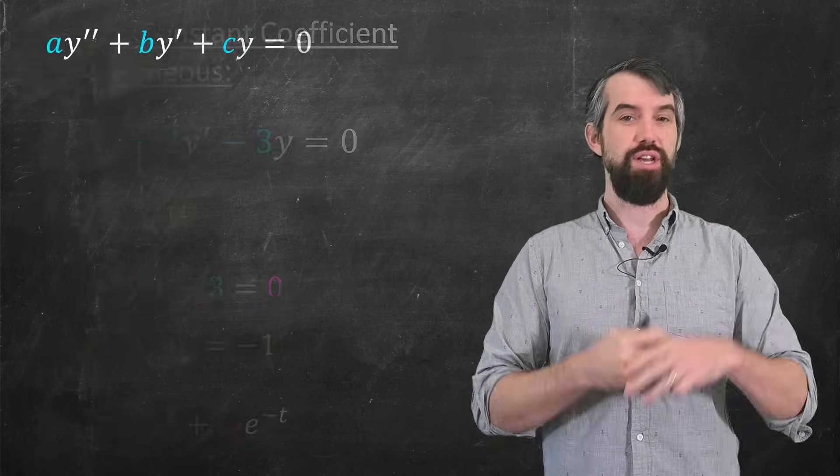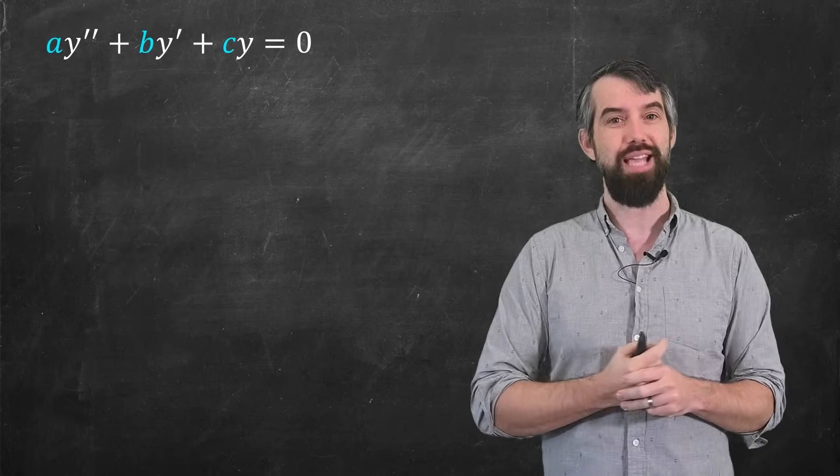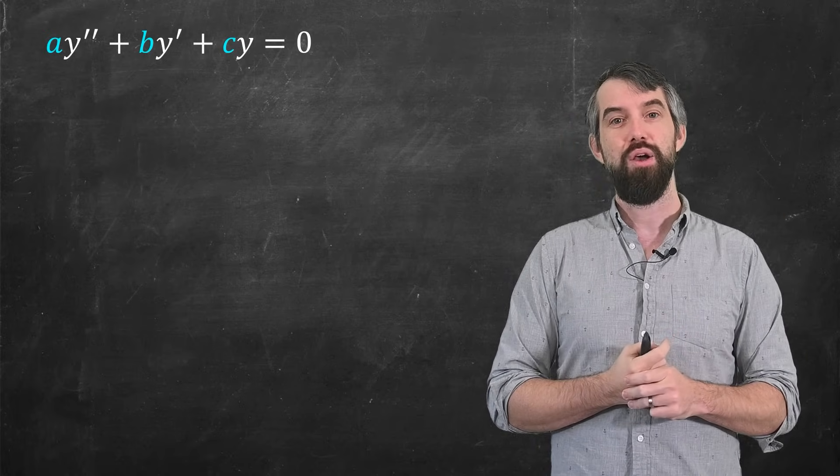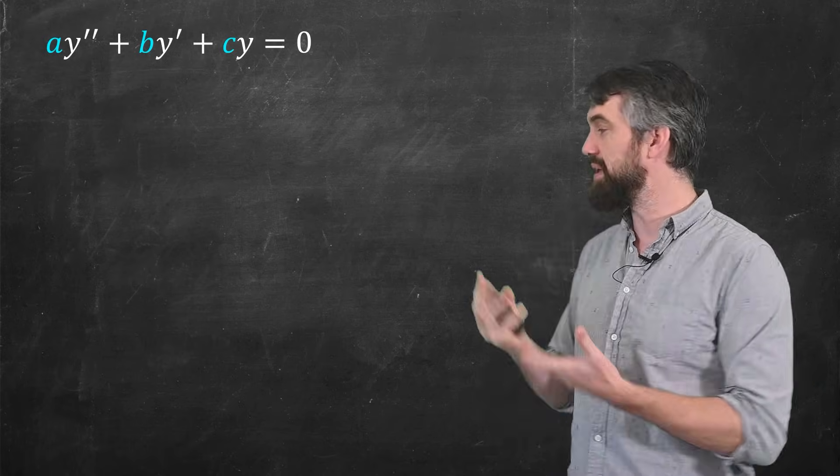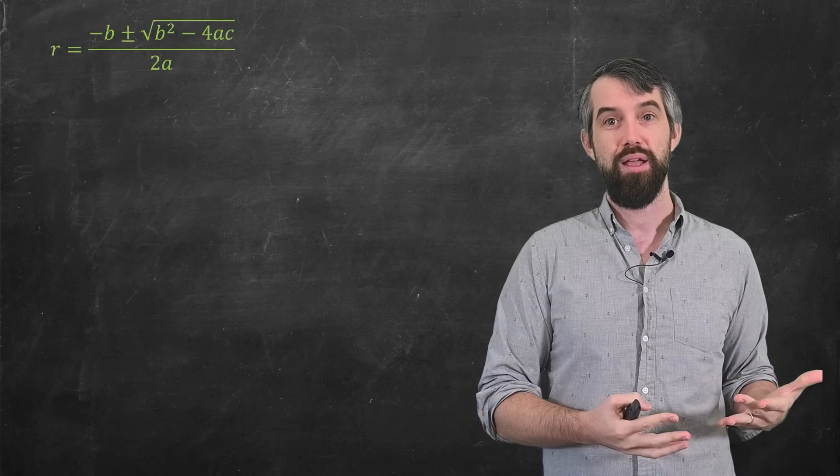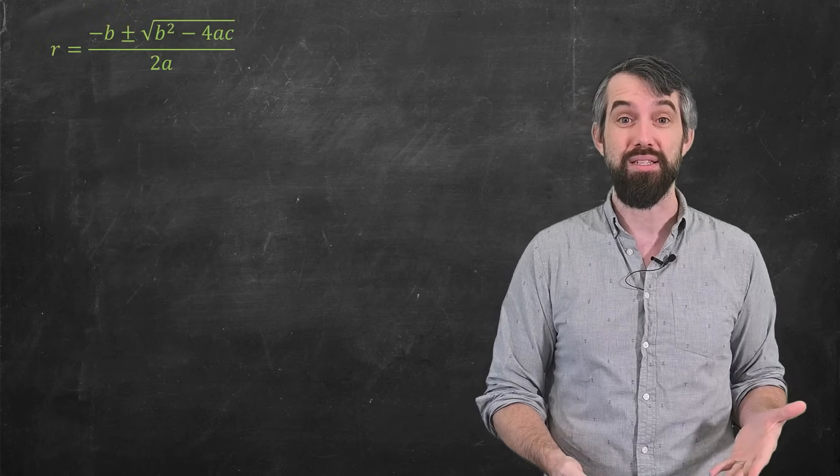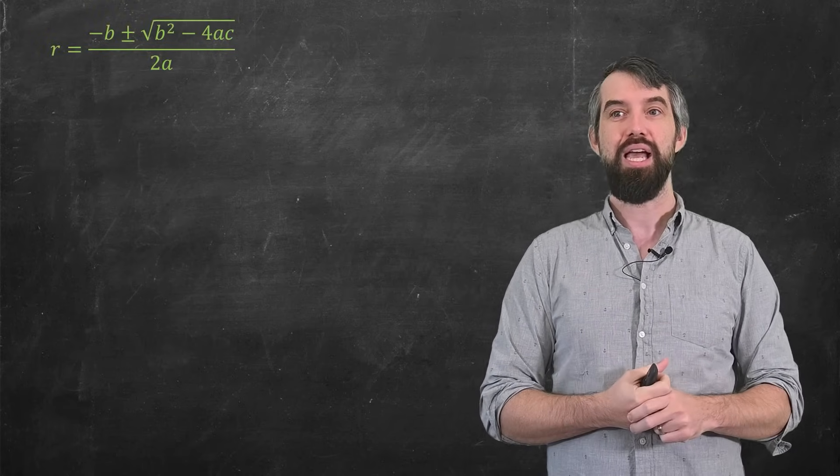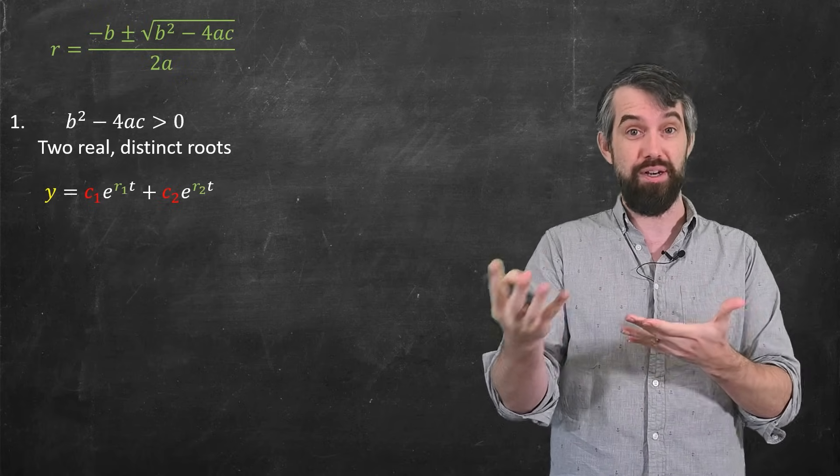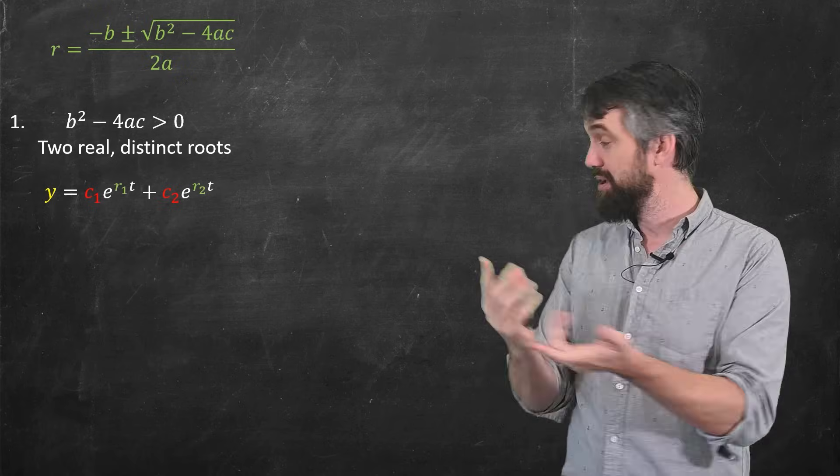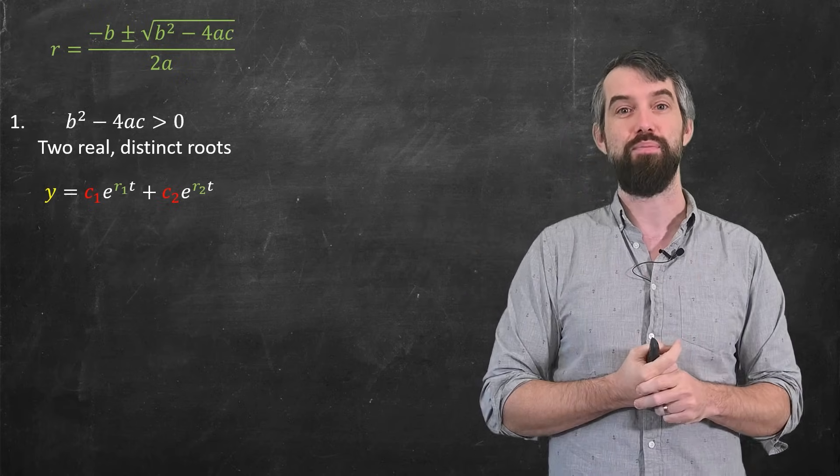There's actually a few cases here, like if I had started generically with three constants a, b, c in my differential equation. Well, when I put in that guess of e to the rt, the roots are going to be given by the quadratic formula. And the quadratic formula has a couple different cases. One possibility is when the thing under the square root is positive, this gives you two real and different answers. That's what I just showed you.